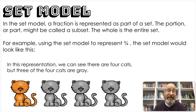In this representation, we can see there are four cats. Again, that's where the denominator comes from. But three of the four cats are gray. So three-fourths of the cats are gray. You might see a question in your math book or on a test that asks you a fraction of a class or a fraction of some group of items. And that's what this is.